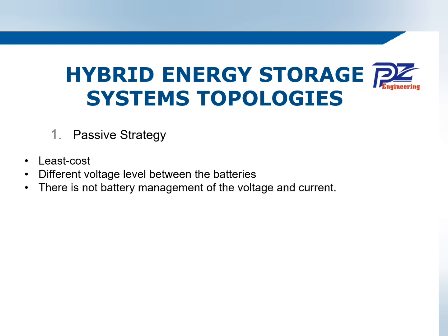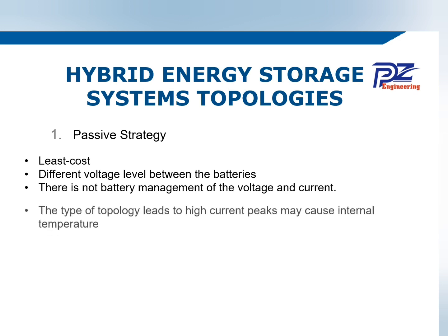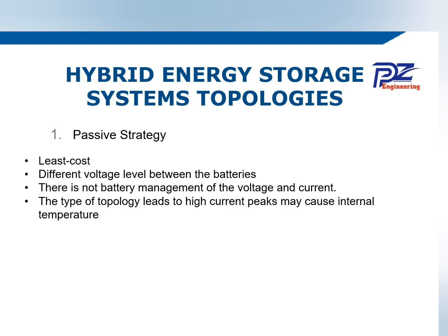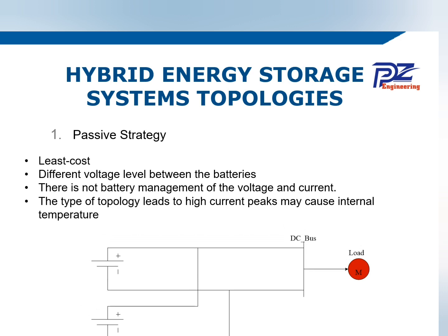The first topology is a passive strategy, which has the advantage of having the least cost. But during differences in voltage level between the batteries, there is no voltage management system in this strategy. This type of topology leads to high current peaks and may cause internal temperature issues because there is not any DC-DC converter controlling it.